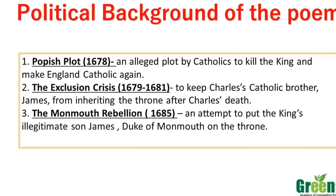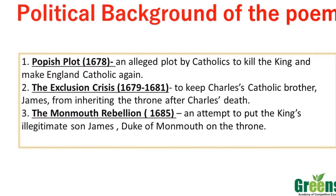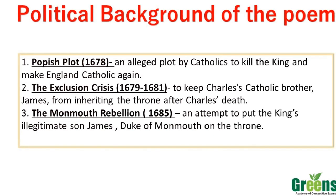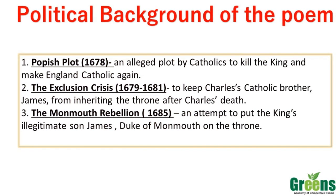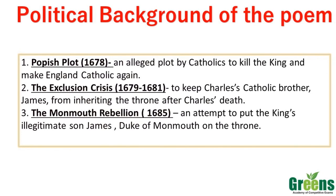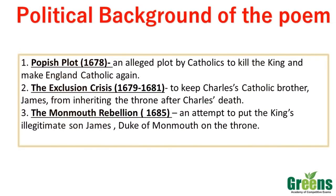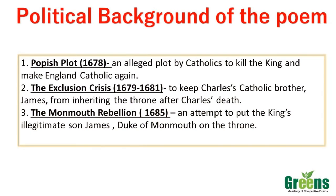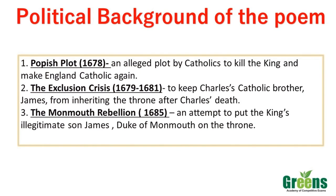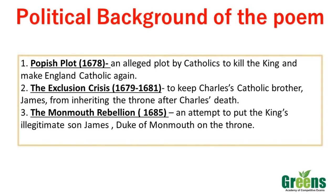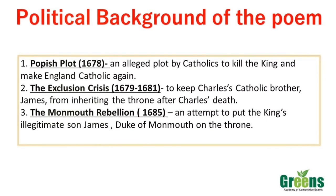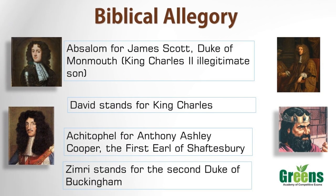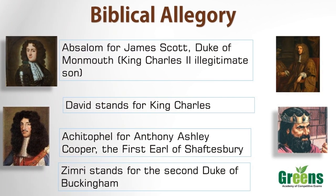The Earl of Shaftesbury was in favor of the King's illegitimate son James Scott, the Duke of Monmouth, and not James, the brother of King Charles II. The reason is simple: James Scott is a Protestant, and Shaftesbury wanted a Protestant ruler. This allegorical approach allowed Dryden to comment on the political tensions of his time without directly criticizing the monarchy or parliament.